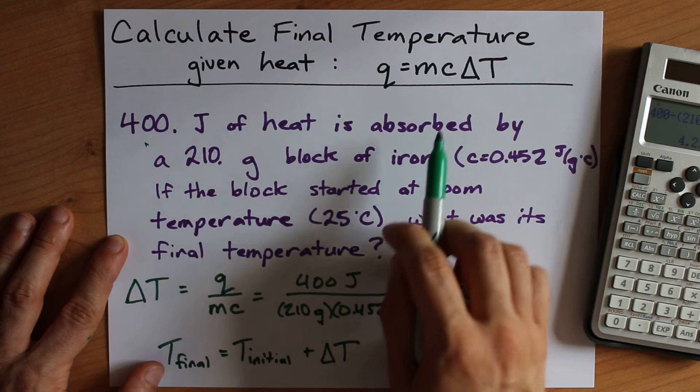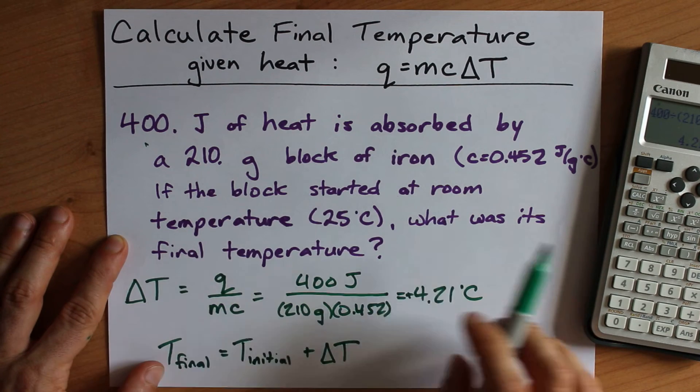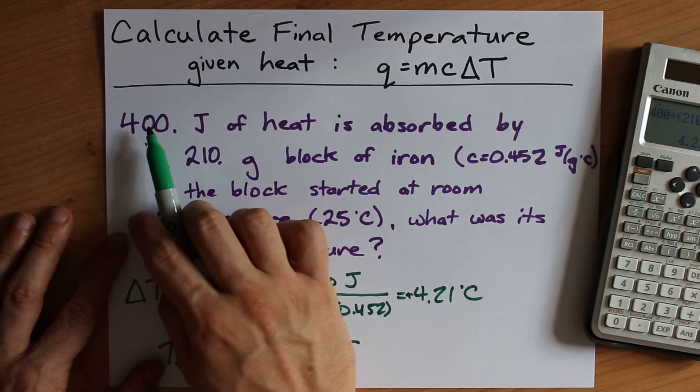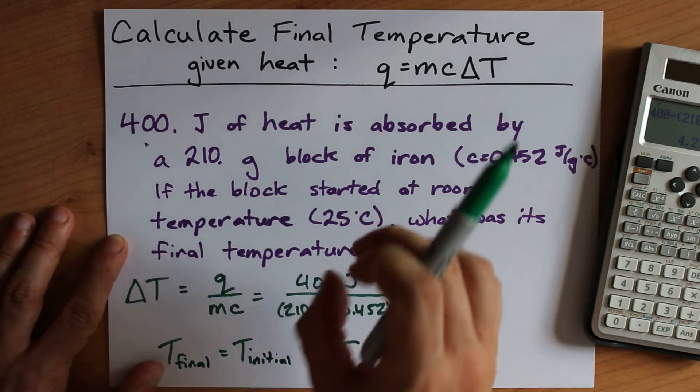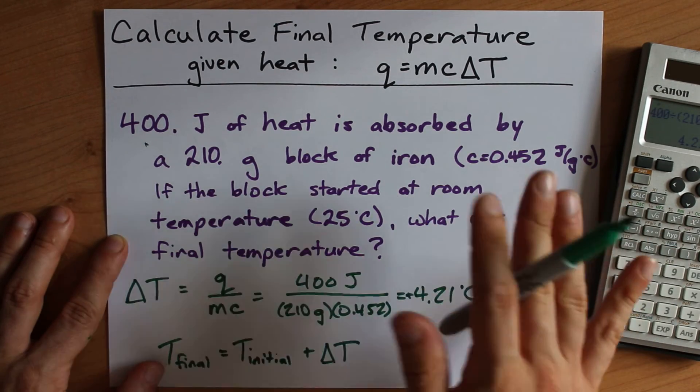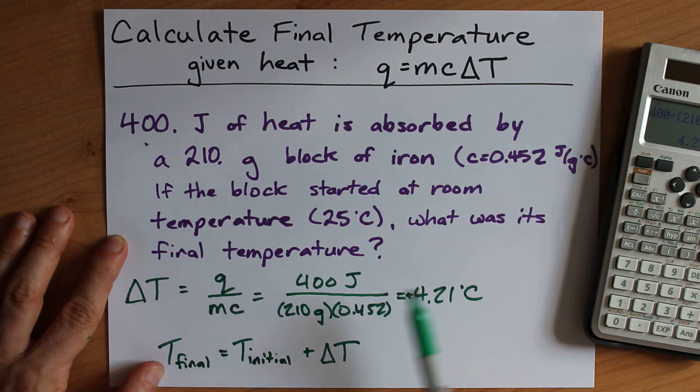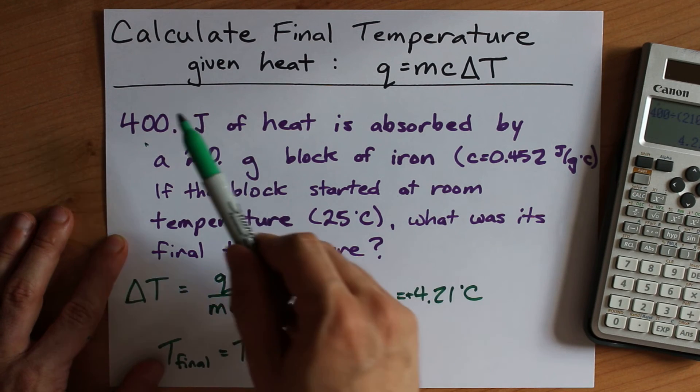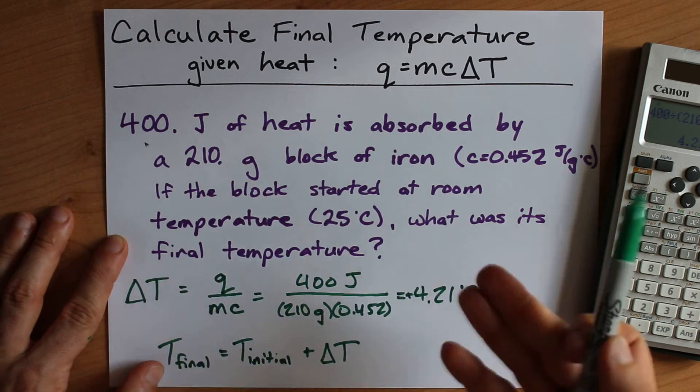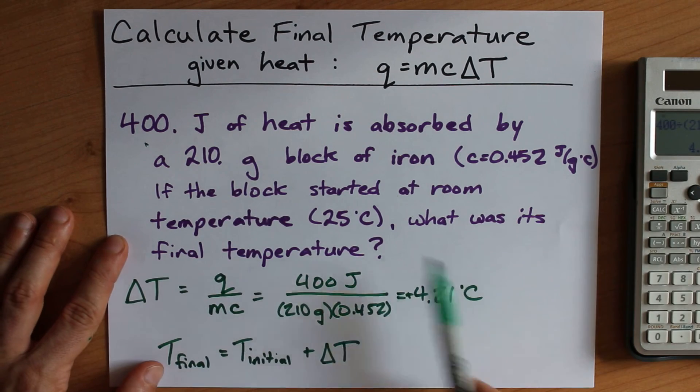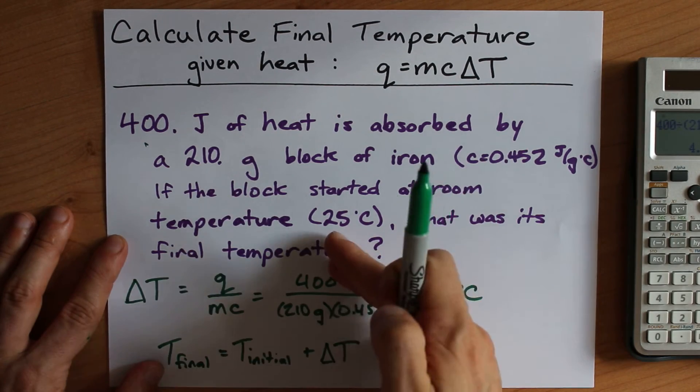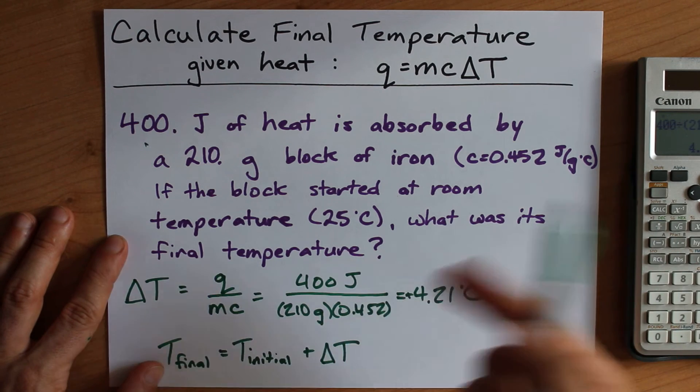If the heat was released by the block of iron, you would need the amount of heat to be negative because the block itself was losing heat. That's the actual trick here. If delta t ends up negative, it's because the block released heat. Or you can think about it as if the block released heat, delta t should be negative because the temperature should go down because heat is escaping.